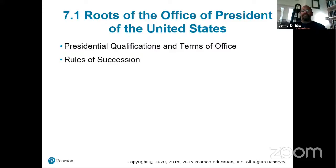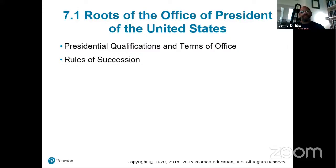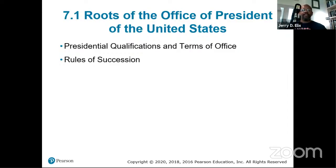Let's start with the roots of the Office of the President. The presidential qualifications and terms of office are: by the time you put your hand up and swear to the Constitution as President, you must have obtained the age of 35 years, have been living in the United States for at least 14 years, and be a natural-born citizen of the United States. That is the only qualification for a President in the Constitution.